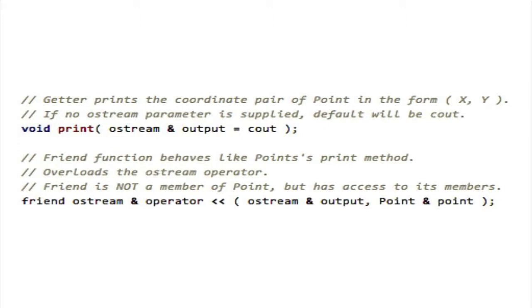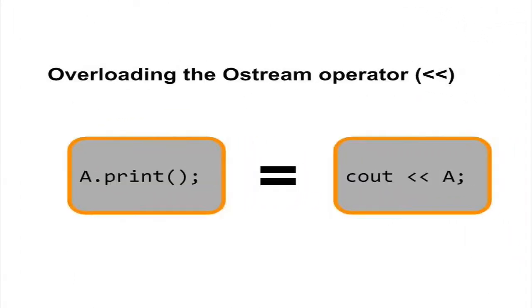Friend functions are commonly used for overwriting the iostream operators so that you can print the contents of an object using the double angle brackets, rather than a local print method.